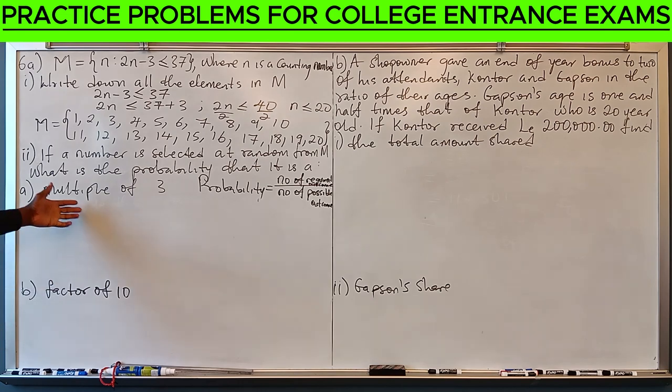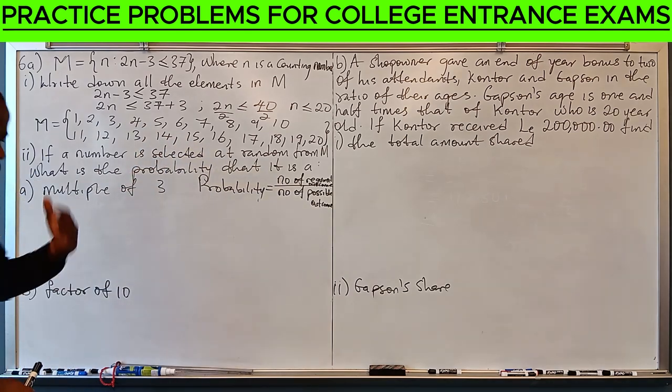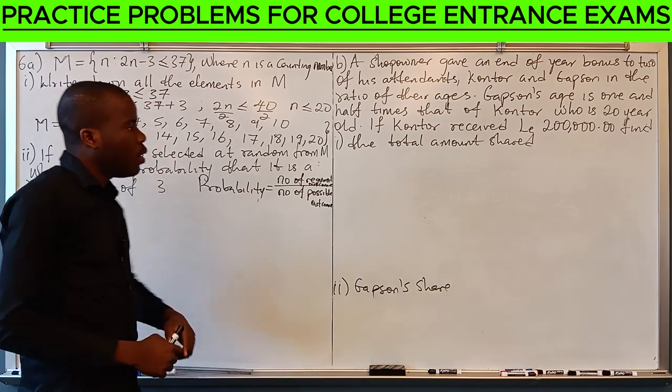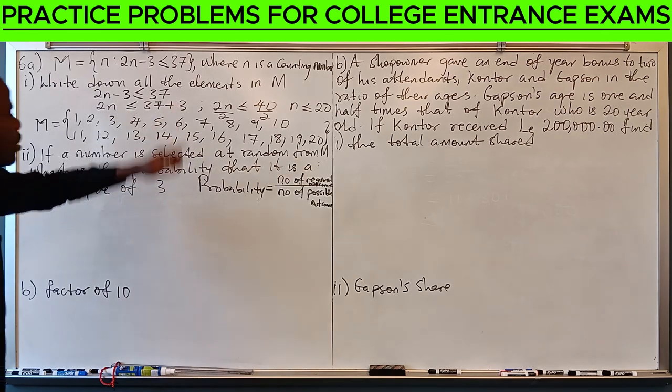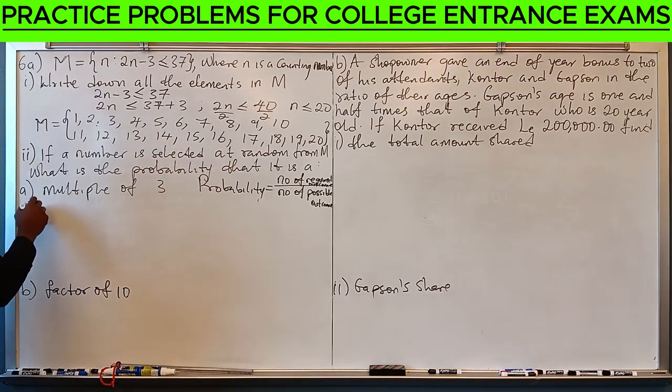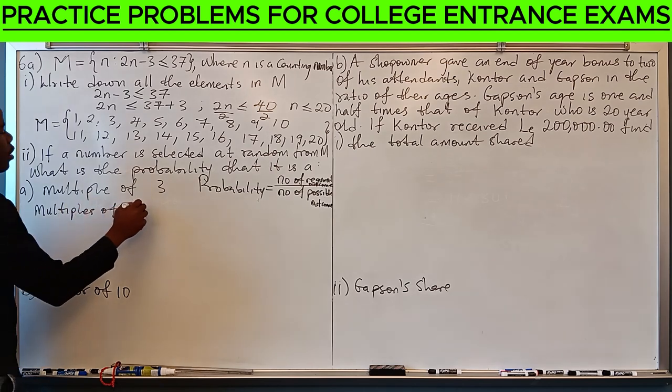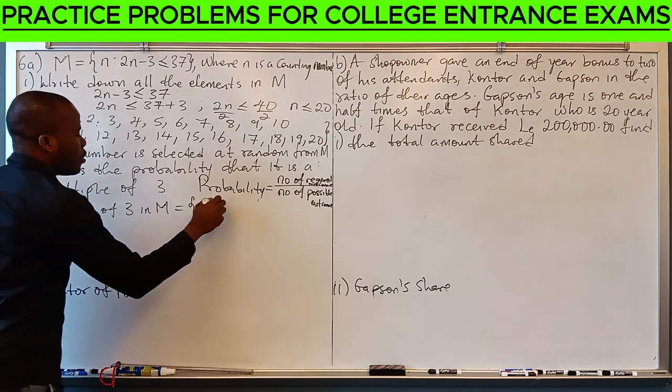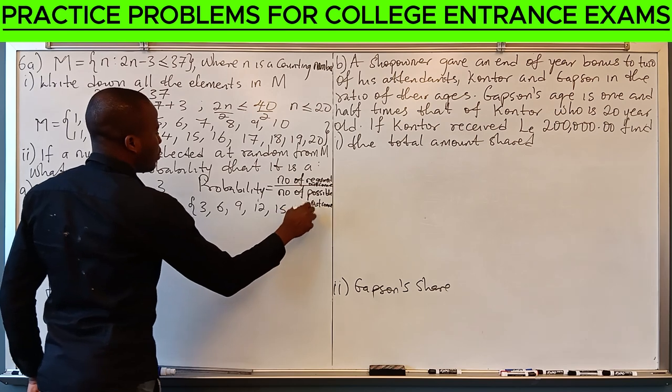Now, what are the multiples of 3 in this set M? Multiples of 3 are those set of numbers 3 can divide. So, in this set, there are 3, 6, 9. Multiples of 3 in M are 3, 6, 9, 12, 15, 18.